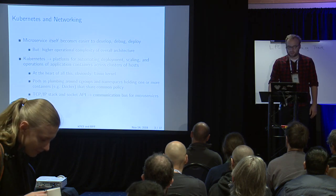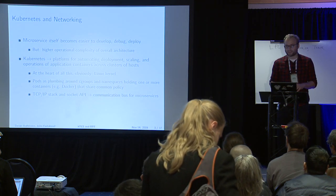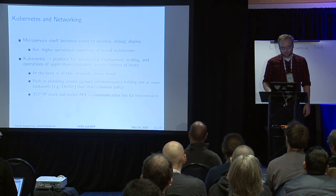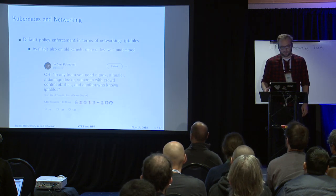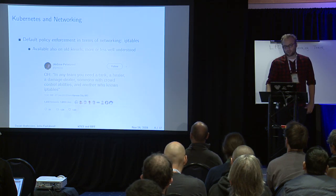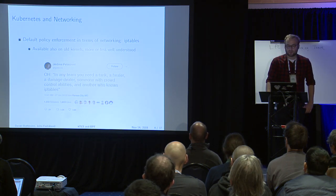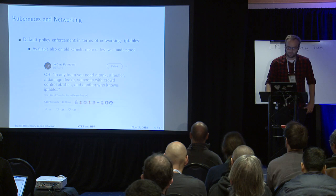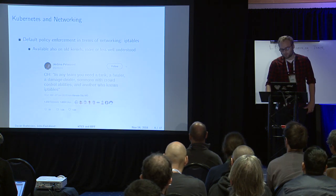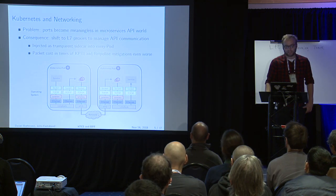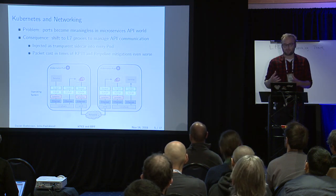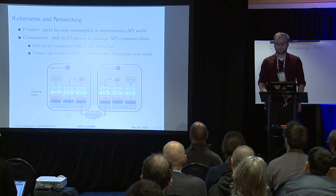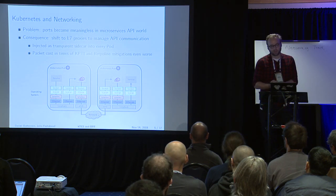While we've talked a lot about XDP here at the networking track, we shouldn't forget that the TCP/IP stack and the whole socket layer is a fundamental thing — it's the communication bus for the microservices. In terms of network policy, what is used in Kubernetes by default is iptables. The good thing is this is available on all kernels and more or less well understood. But the big problem is that in a world where you only communicate through APIs, the ports, L3, L4, more or less become meaningless because you either have to open up everything or just don't.